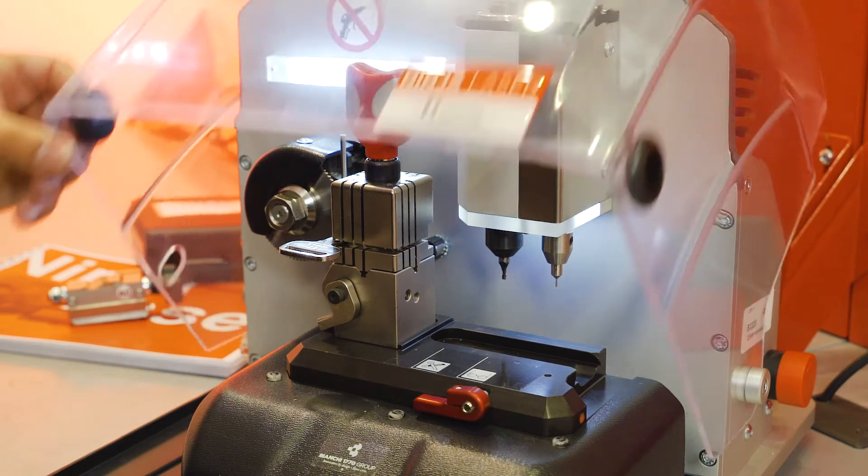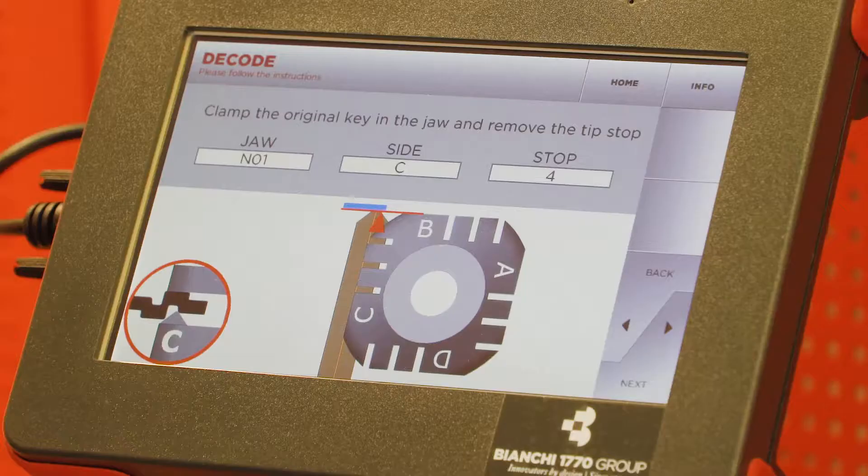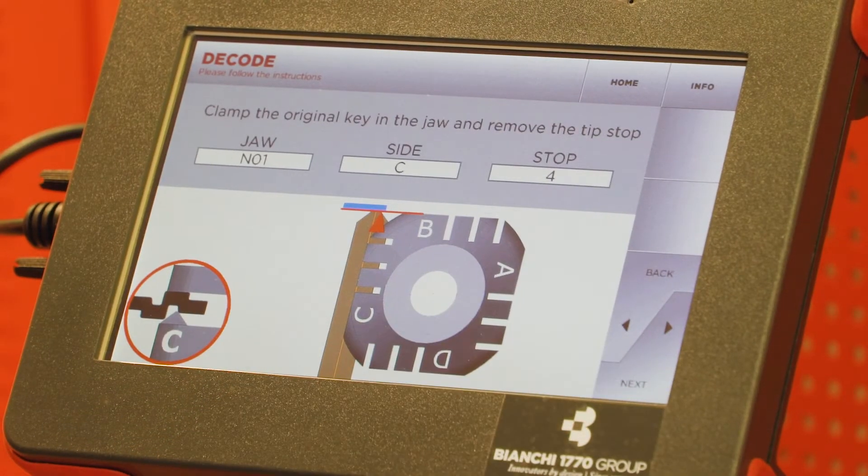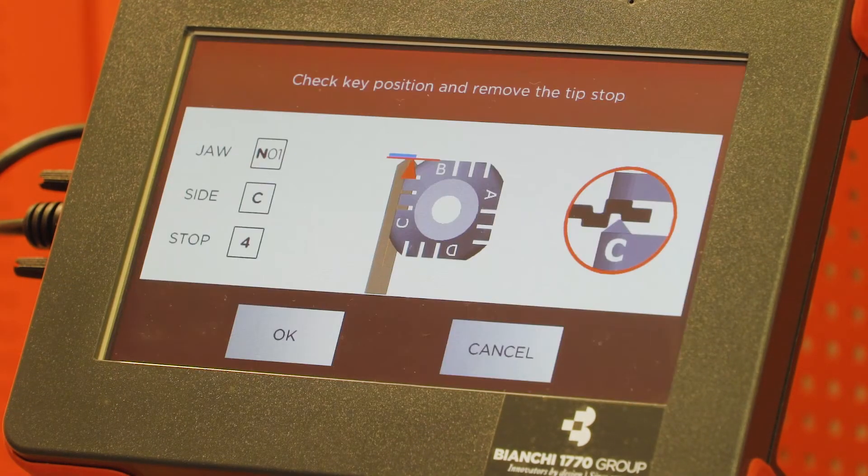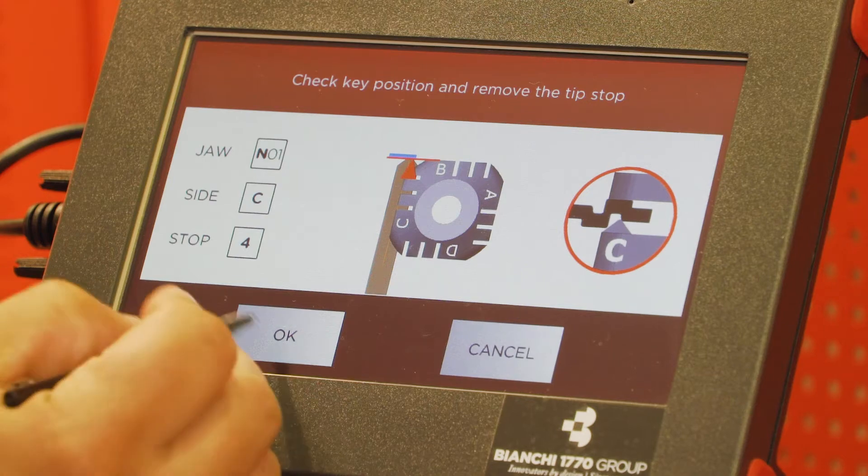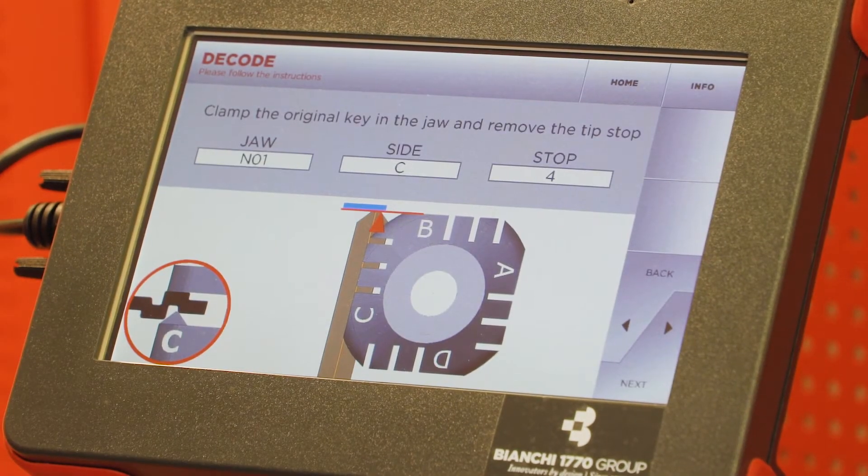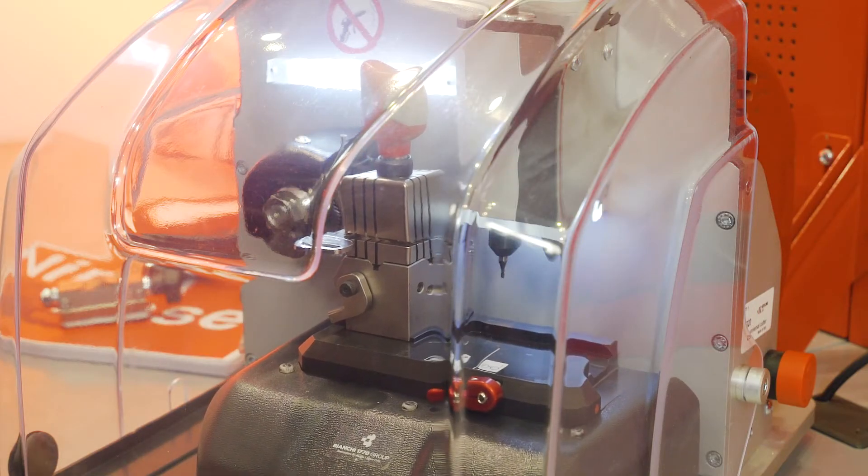Close your shield, select next. The right side has been removed. OK. OK again. And now we're ready to decode.